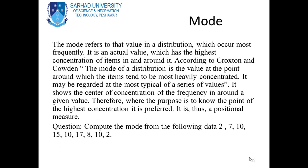Mode is referred to that value in a distribution which occurs most frequently. It is an actual value which has the highest concentration of items in and around it. According to Croxton and Cowden, the mode of a distribution is the value at the point around which items tend to most heavily concentrate. It is thus a positional measure.